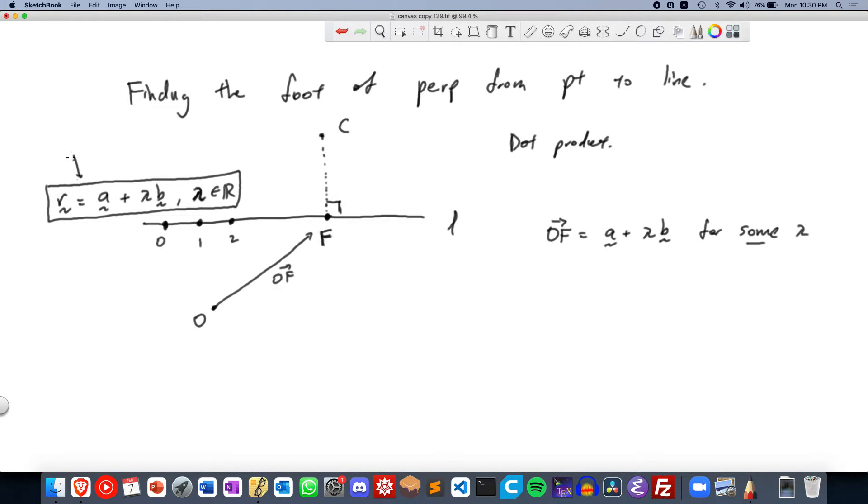So this is a set of points. It's an infinite set of points which defines the line, right? Because a line is a collection of many, many points. So this is an infinite set of points, for all values of lambda.